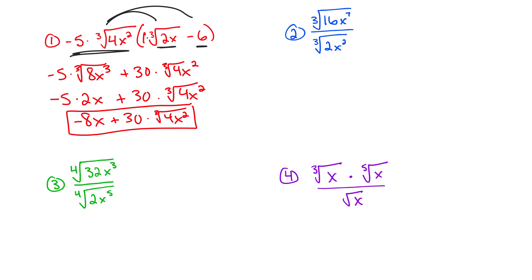Problem number 2. I have a cube root divided by a cube root. That is the same thing as the cube root of that written as an entire fraction. 16x to the 7th over 2x squared. 16 divided by 2 is 8. x to the 7th divided by x to the 2nd. Well, those 2x on the bottom would eliminate with 2 of the 7 on top, leaving you with 5. The cube root of 8 is 2. The cube root of x to the 5th is x with the remainder of 2. And this is our solution.